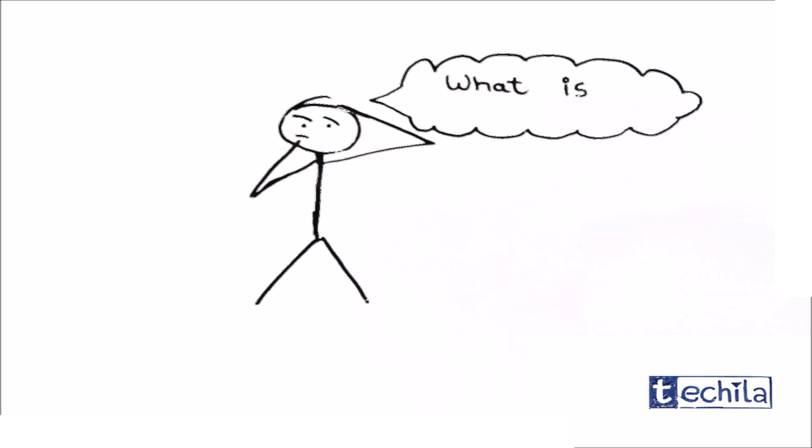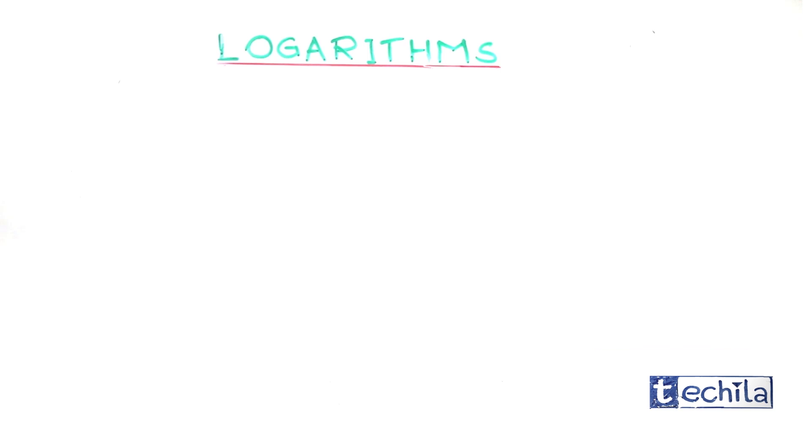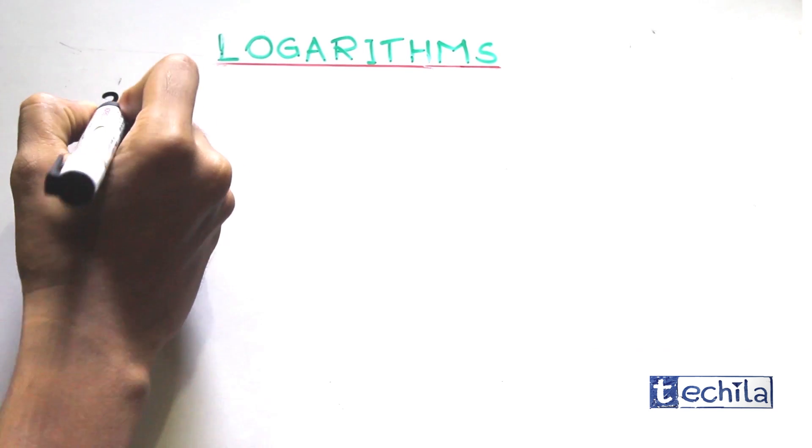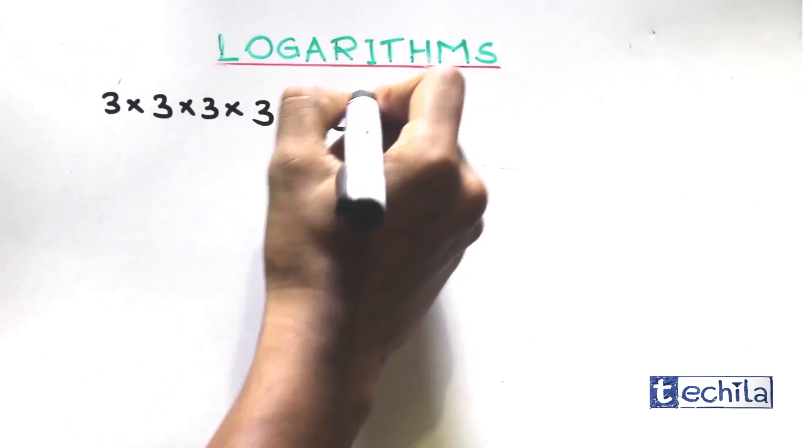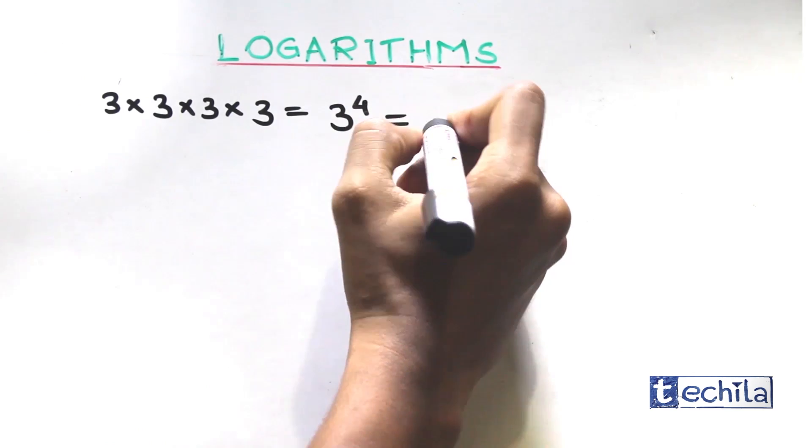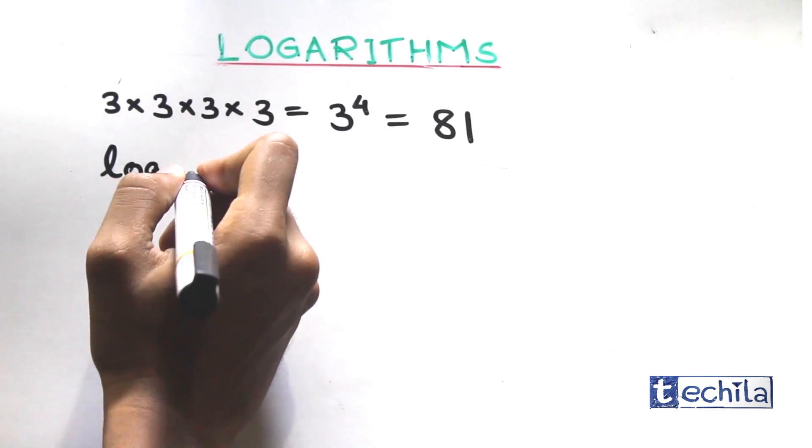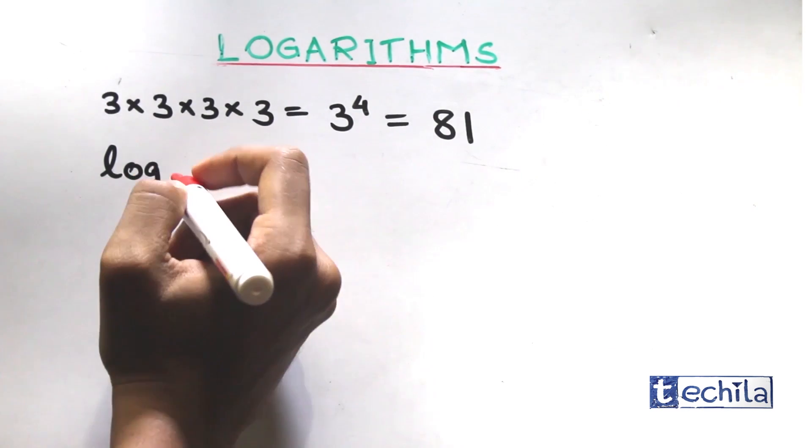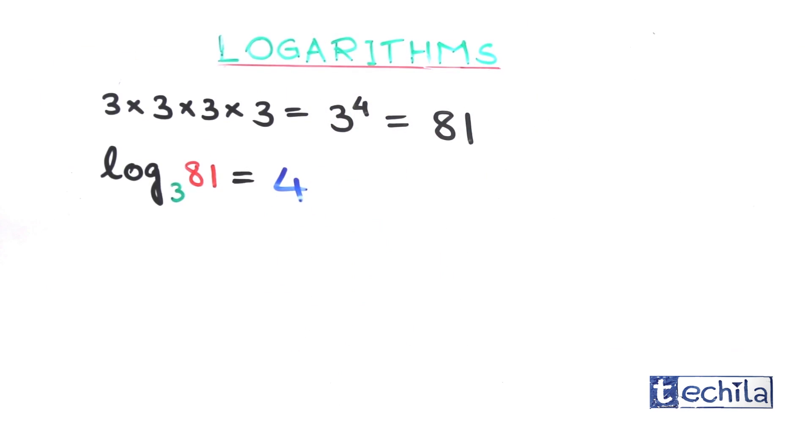But firstly, what is logarithm and why do we use it? Let's find out. We know that 3 into 3 into 3 into 3 can be written as base 3 raised to the power 4, which equals 81. The above equation can also be written as log to the base 3 of 81 equals 4.